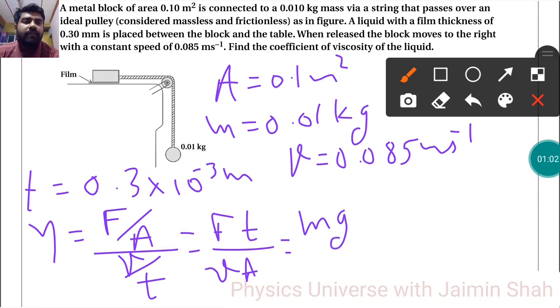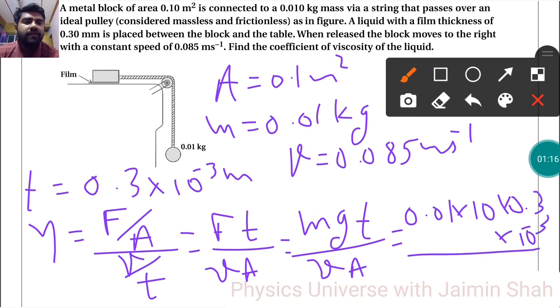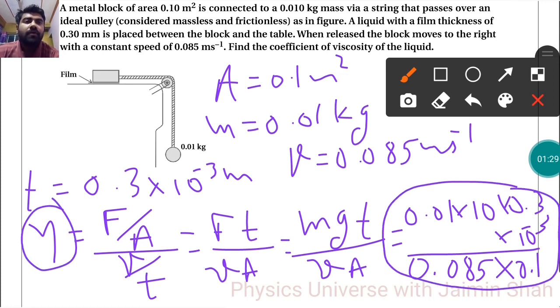So mass times g times T upon V times A. Now, mass is 0.01 times 10, times T which is 0.3 × 10^-3, upon V which is 0.085 times 0.1. By calculating all these terms we will get eta, the coefficient of viscosity of the liquid.